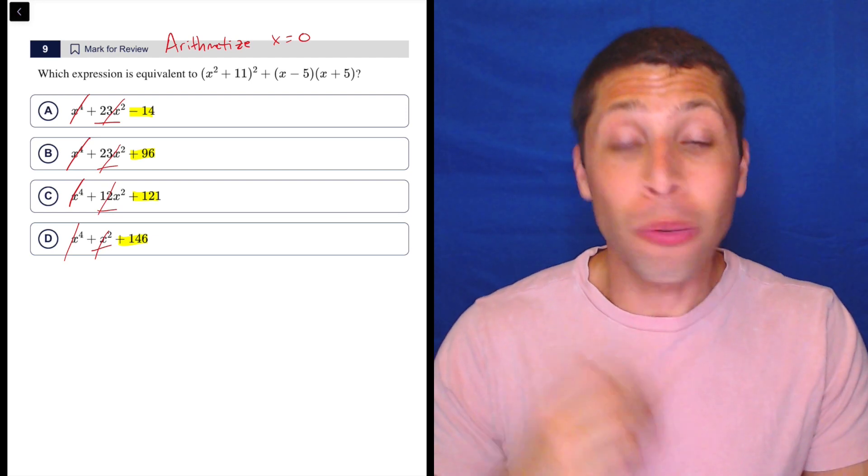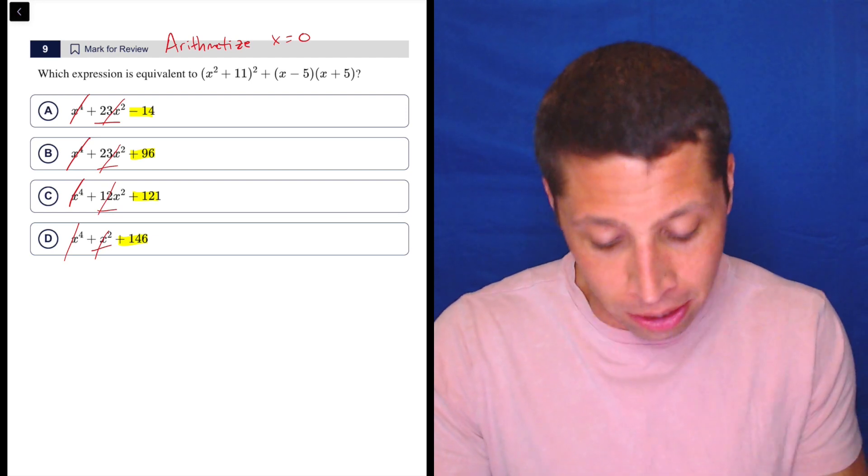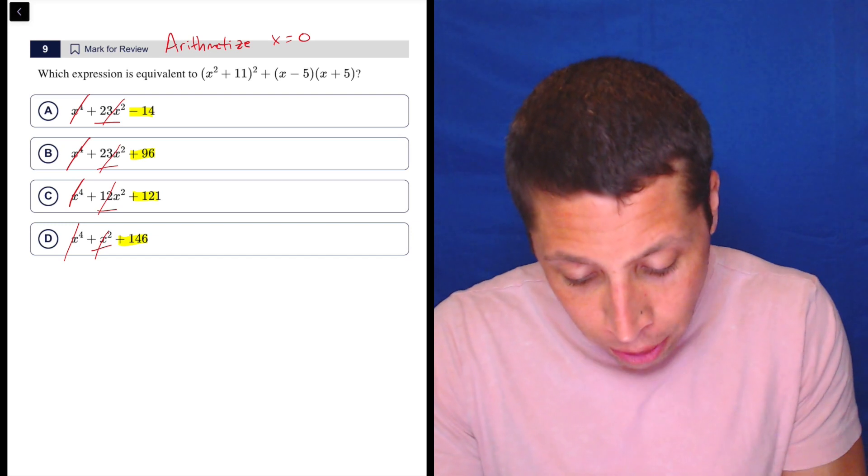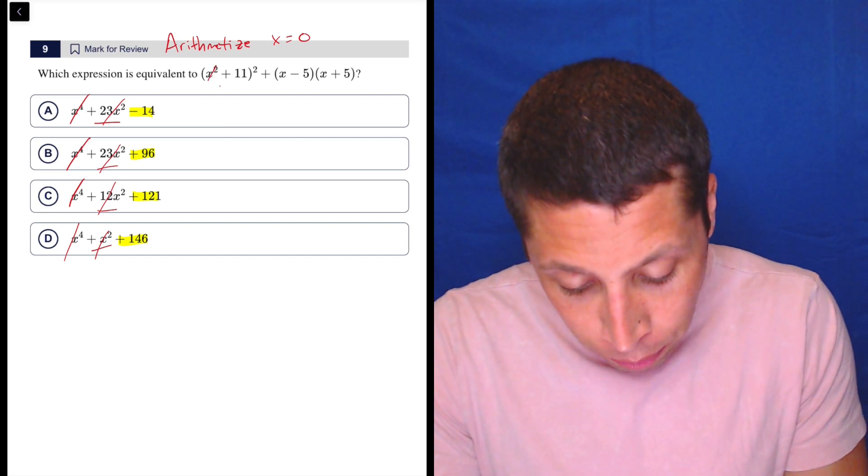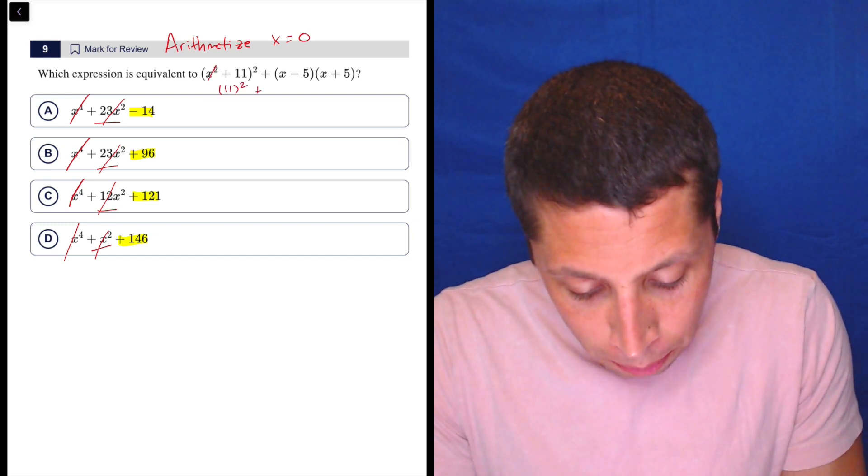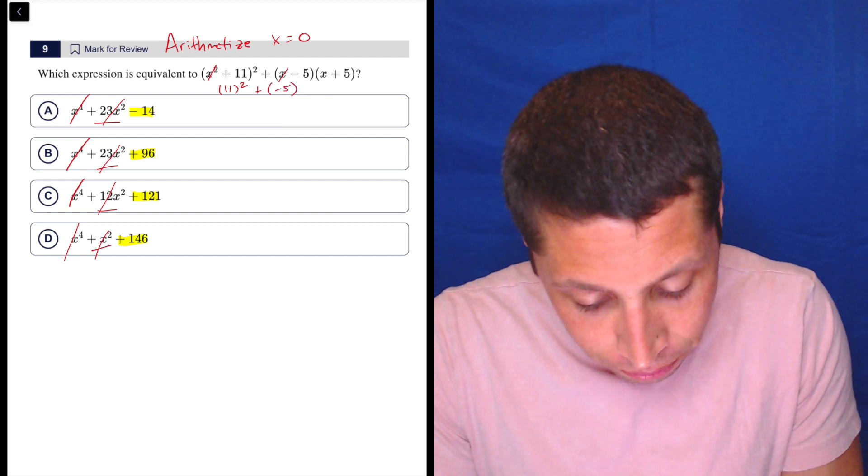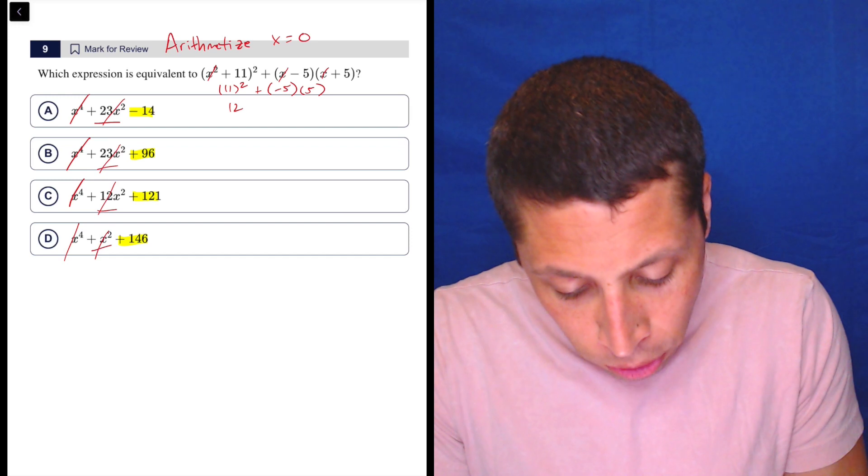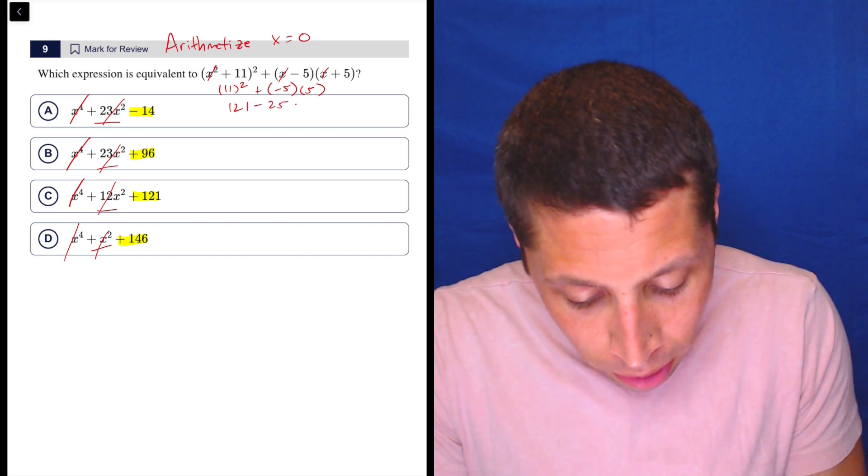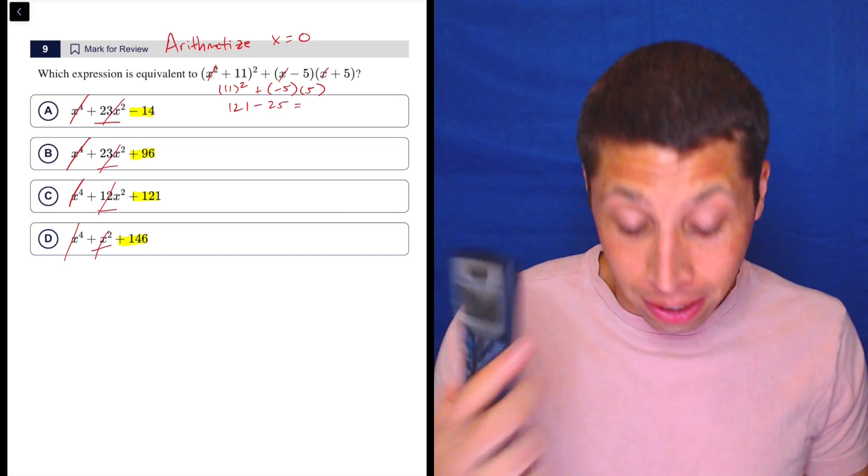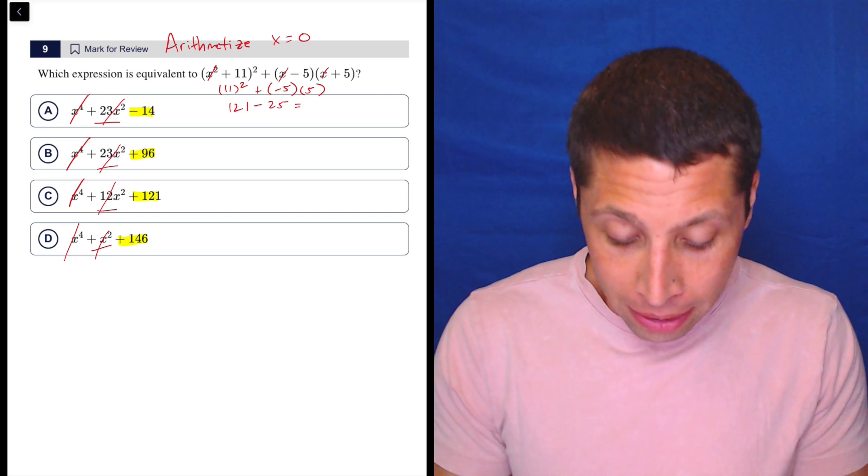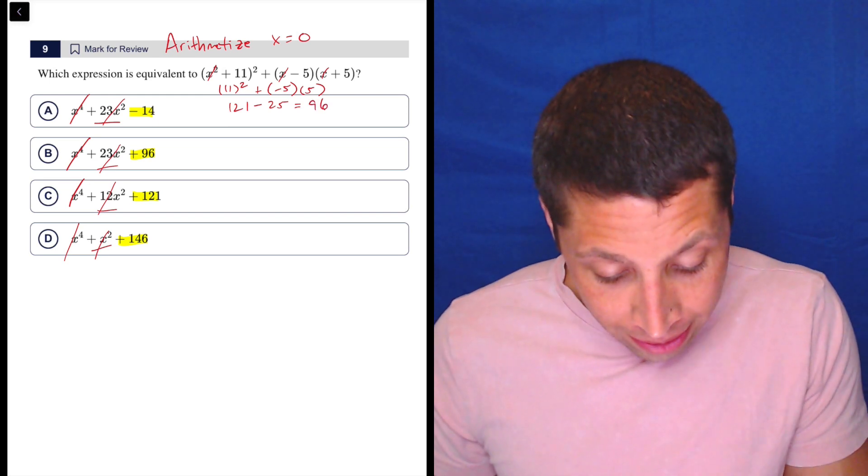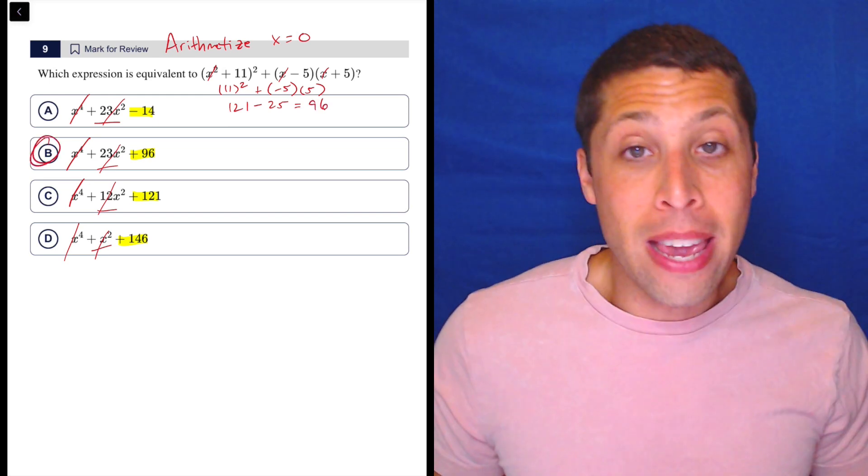If algebra is your default, well, then you're going to do a lot of algebra for no reason. Because watch, if we plug in zero, what's going to happen? This is going to go away. We're going to have 11 squared plus—well, this goes away, so that's negative five, and this goes away, so that's five. So, 121 minus 25. You could get the calculator here. It's going to be 96, I believe. Yep. And that's it. What answer has 96? D. Done.